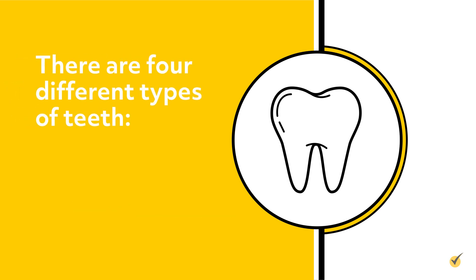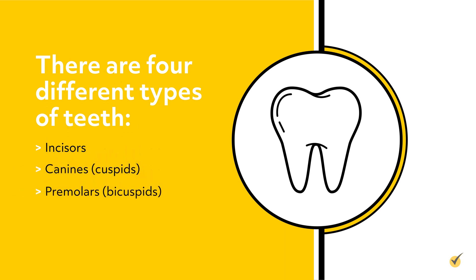There are four different types of teeth: incisors, canines — also known as cuspids — premolars, also known as bicuspids, and molars.